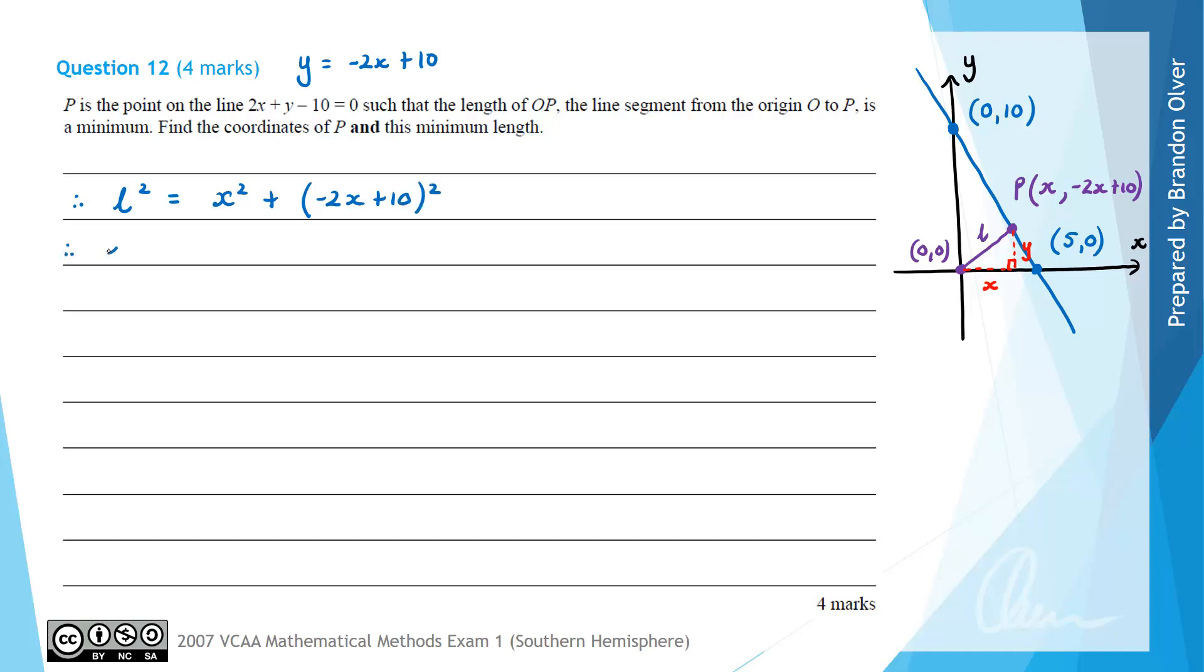Therefore, L squared is equal to x squared. And then expanding this would give plus 4x squared minus 40x plus 100. And we could simplify that so that L squared equals 5x squared minus 40x plus 100.